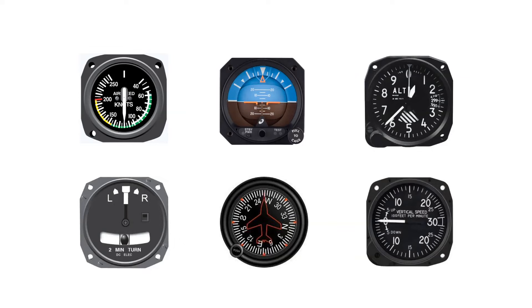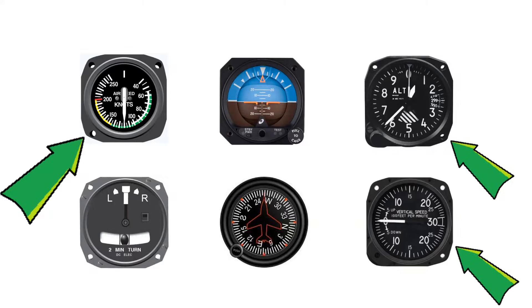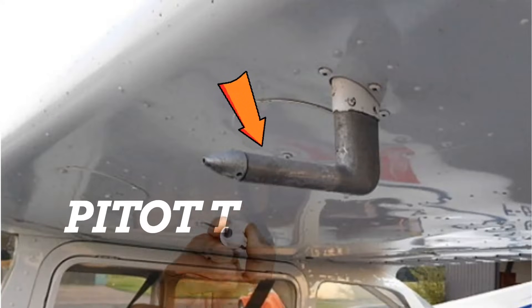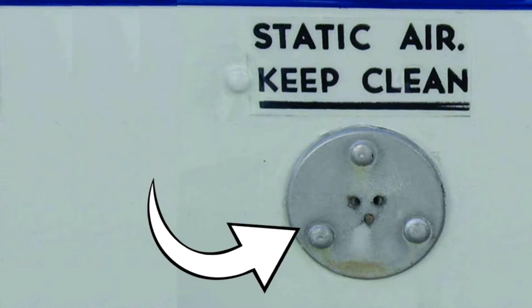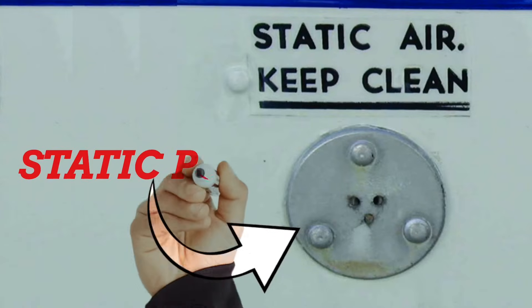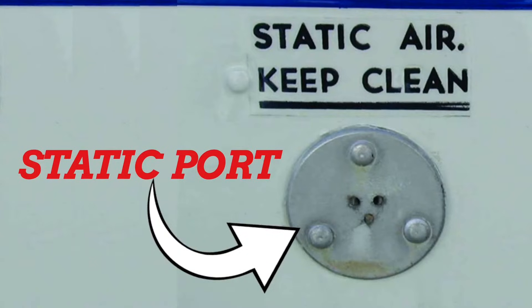In the last few lessons, we've been discussing the gyroscopic instruments, but today we're going to talk about three of those primary flight instruments that use air pressure to give us information. These are the airspeed indicator, the altimeter, and the vertical speed indicator. These instruments are provided air pressure from the pitot tube and the static port, and they turn it into information that's really important for pilots in flight.